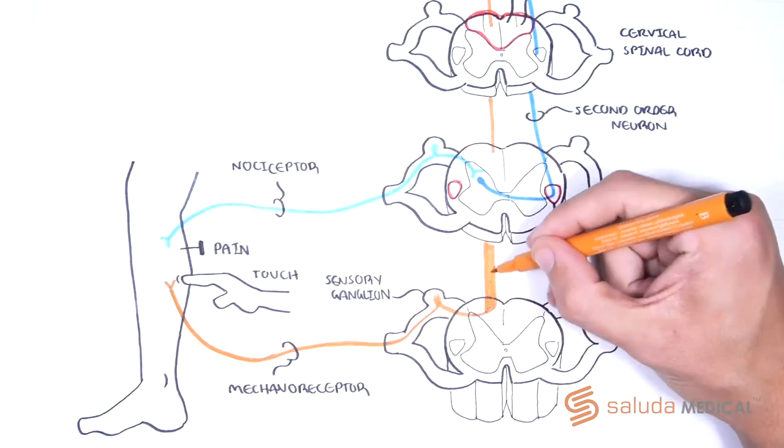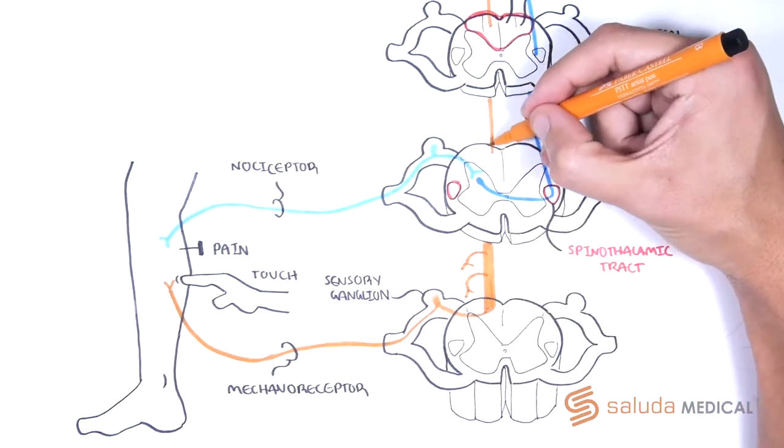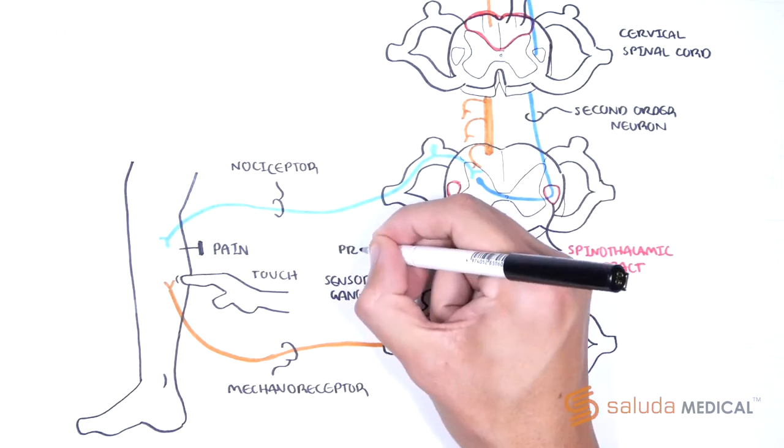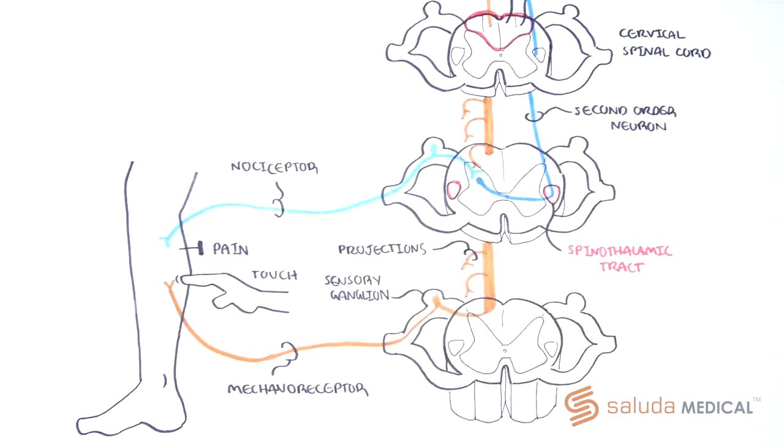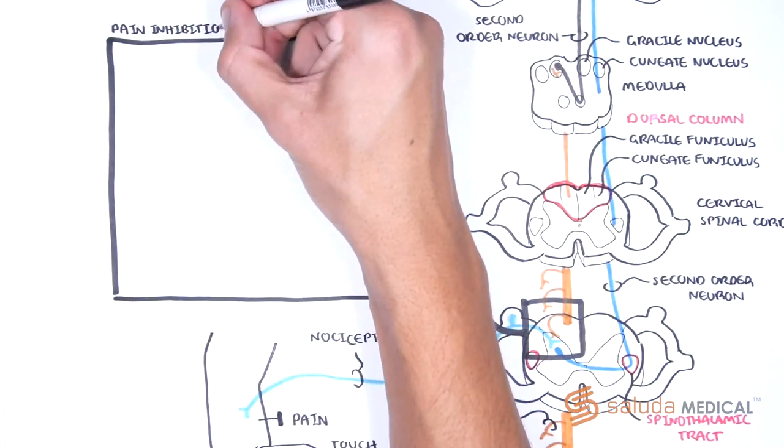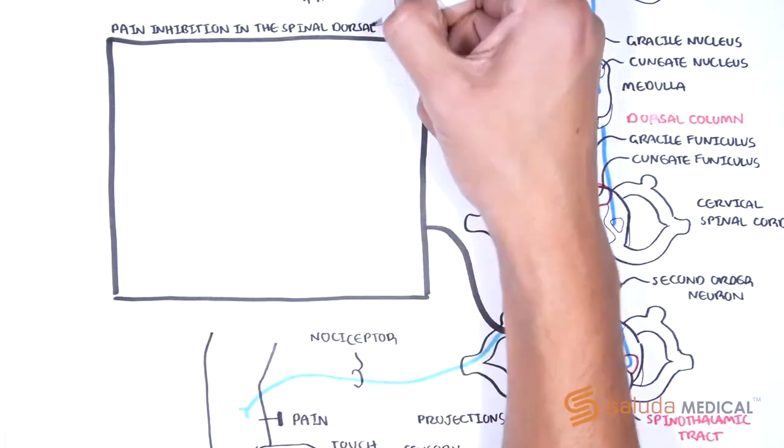These fibres also send multiple projections from their main axon back down to the dorsal horn for several spinal segments, from their point of entry as they travel. They get thinner as they ascend and move immediately along their path. These mechanoreceptor fibres play an important role in the processing of pain in the spinal dorsal horn.